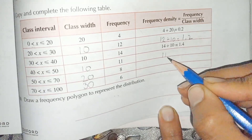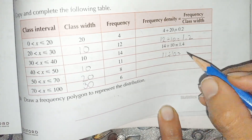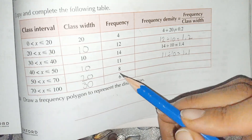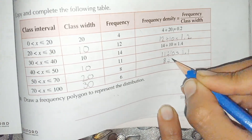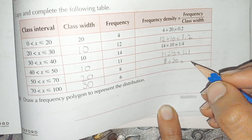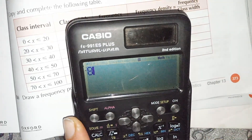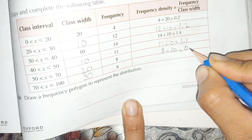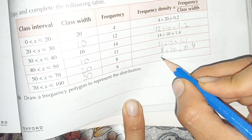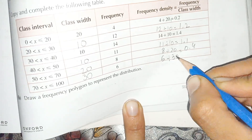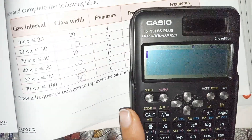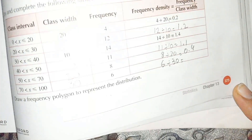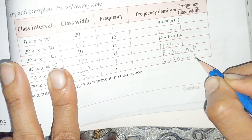Frequency is 11 and class width is 10, by dividing we get 1.1. Frequency is 8 and class width is 20, by dividing we get 0.4. And the frequency is 6 and class width is 30, by dividing we get 0.2. And now this is the frequency density column complete.